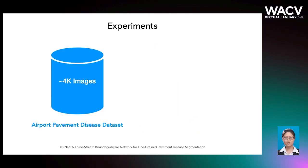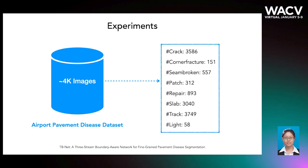Next, let's move on to the experiments. To evaluate the proposed method, we conduct the experiments on an airport pavement disease dataset. The dataset contains around 4,000 images captured with a grayscale camera. Here shows the number of the annotated areas for each class.